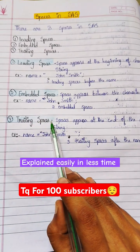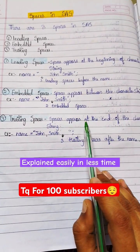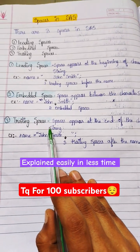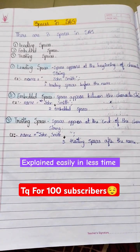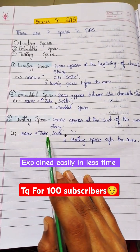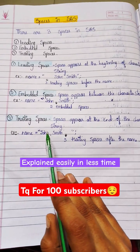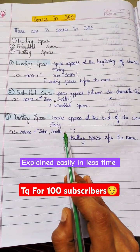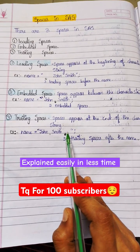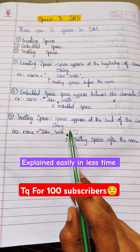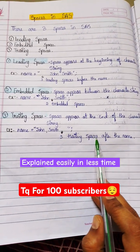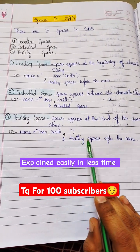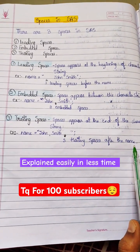Next is trailing spaces. Spaces that appear at the end of the character string are nothing but trailing spaces. Here you can see the example: John Smith, followed by three spaces at the end. So this is nothing but trailing spaces. We can see three trailing spaces after the name.